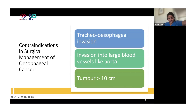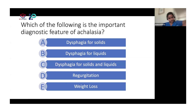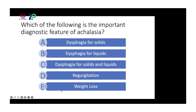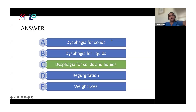Very good try. Now, who do we have next? George, this is for you. Which of the following is the important diagnostic feature of achalasia? Dysphagia for solids, dysphagia for liquids, dysphagia for solids and liquids, regurgitation and weight loss. Dysphagia for solids and liquids — very good. How did you get to that? I've read about achalasia. You're absolutely right. But do you know where you see dysphagia for just solids or just liquids?